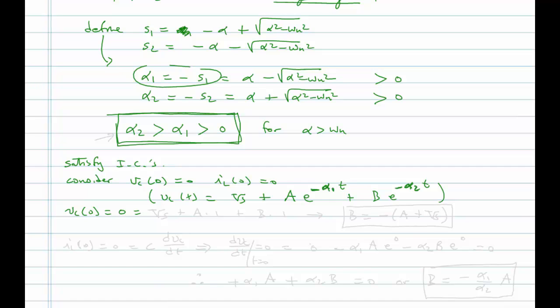When we evaluate at t equals zero, we have VS plus A times one plus B times one. This leads us to write: B equals minus A plus VS — or equivalently, VS equals minus A plus VS with B absorbed.